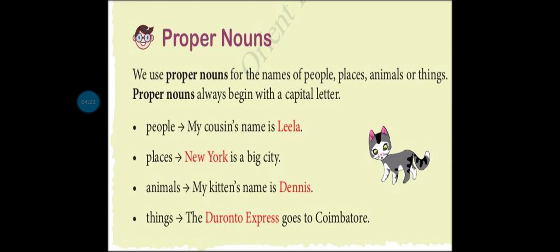Places: New York is a big city. City is a common noun, but New York — highlighted in red — is a particular place name, so we call it a proper noun. Animals: my kitten's name is Dennis. Kitten is a common noun, but Dennis is a proper noun. Things: the Toronto Express goes to Coimbtore. Expresses are common nouns, but Toronto is a particular express name, so it is a proper noun.